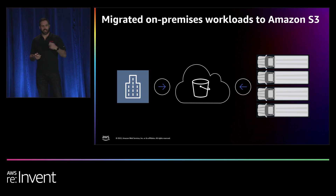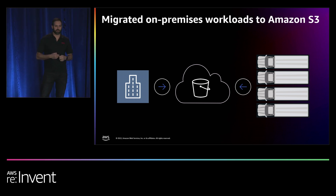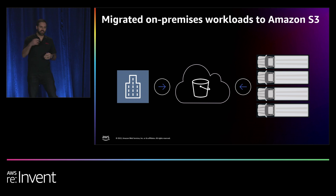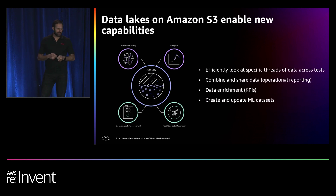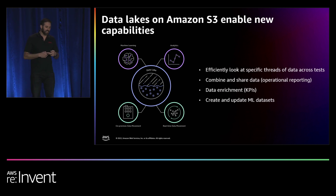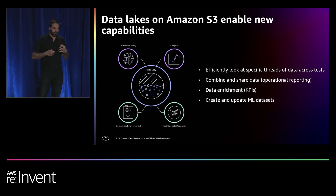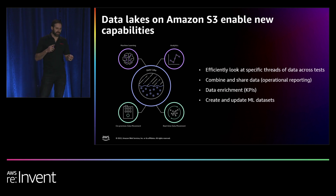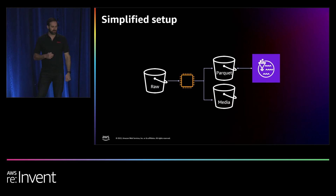The first step was making sure we got all the data into S3. We chose to work with AWS for community and enterprise support. We migrated all on-prem data and started collecting data directly from vehicles into S3. We built a data lake for the same reasons many customers do: we wanted a centralized catalog for our disparate sources — on-vehicle data, simulation data, internal tool data, and weather and traffic data from external sources. We needed centralized access governance and integration with different processing, analysis, and dashboarding tools.